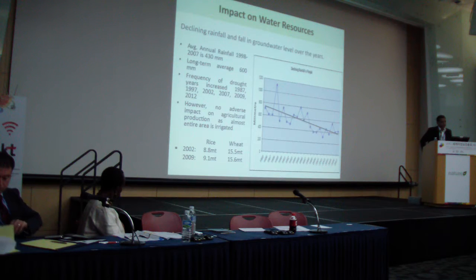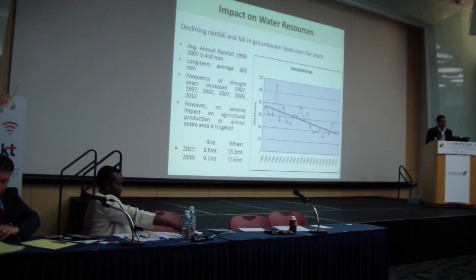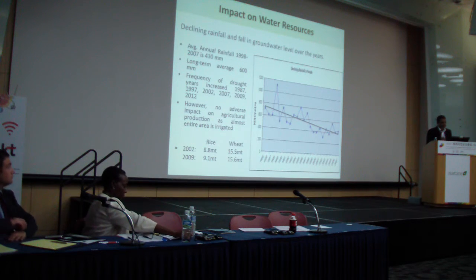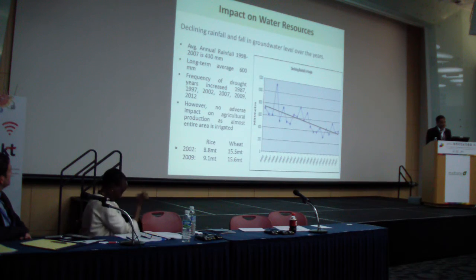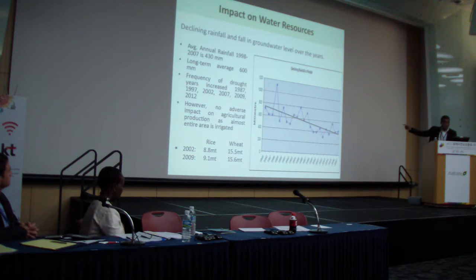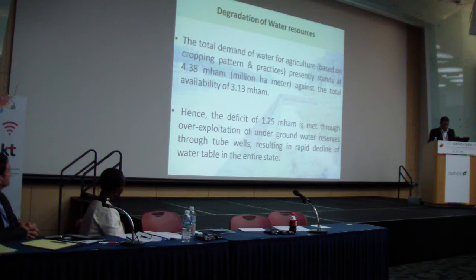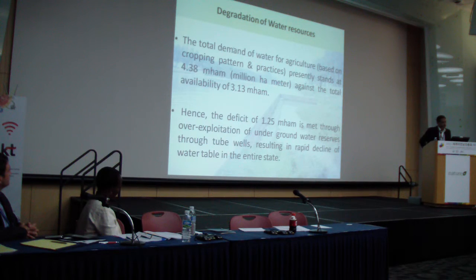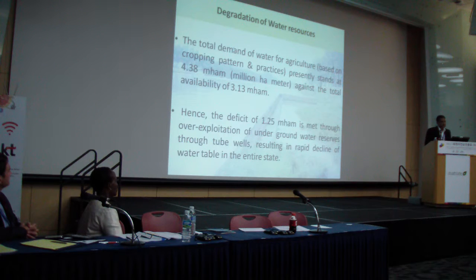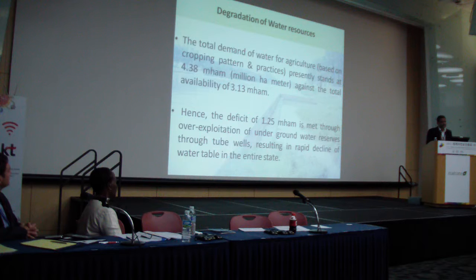The most important effect of increasing agricultural production in Punjab has been on groundwater levels. The groundwater level has been falling throughout the last 20 years, with a consistently declining rate. The total demand for water for agriculture is almost 4.3 million hectare-meters per annum, while availability of water is only 3.3 million hectare-meters. This deficit of 1.25 million hectare-meters per annum is met through tube wells, meaning more water is extracted from the ground to meet the ever-increasing need of rice and wheat cultivation.